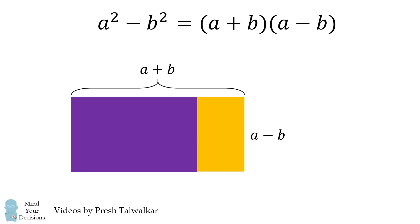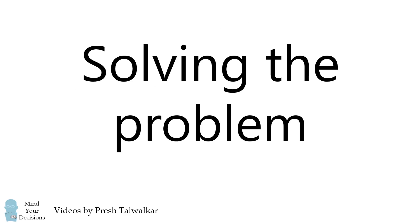Thus we have the formula a squared minus b squared is equal to a plus b multiplied by a minus b. So how does it help us solve this problem?